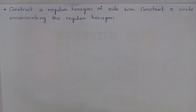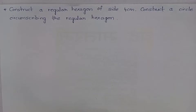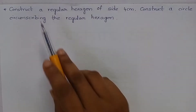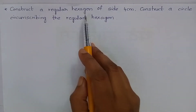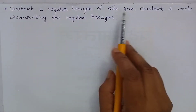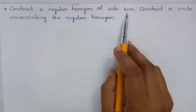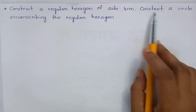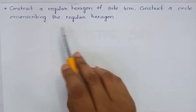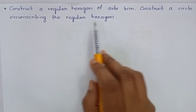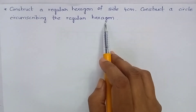Namaste. Welcome to Blishon concept teaching. Let's do the construction. Construct a regular hexagon of side 4 cm. Construct a circle circumscribing the regular hexagon.